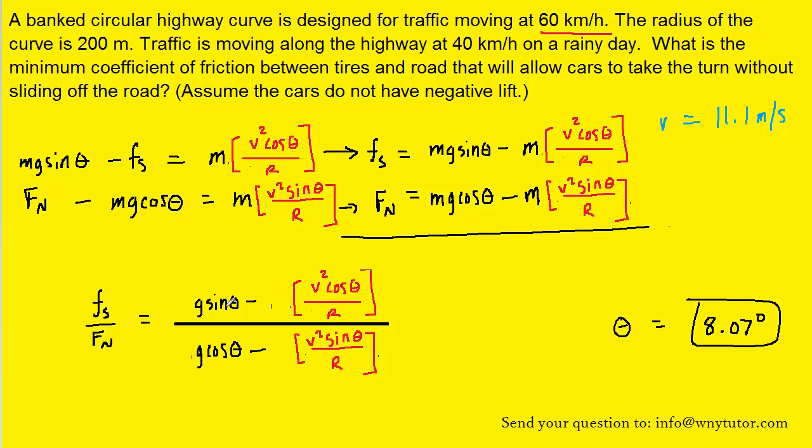We know G, the theta was solved earlier as 8.07 degrees, the speed we're using is 11.1 meters per second because we're on this special rainy day, and the radius was given as 200 meters. When you plug all the known values in, you should get 0.078 for the ratio of Fs to Fn.